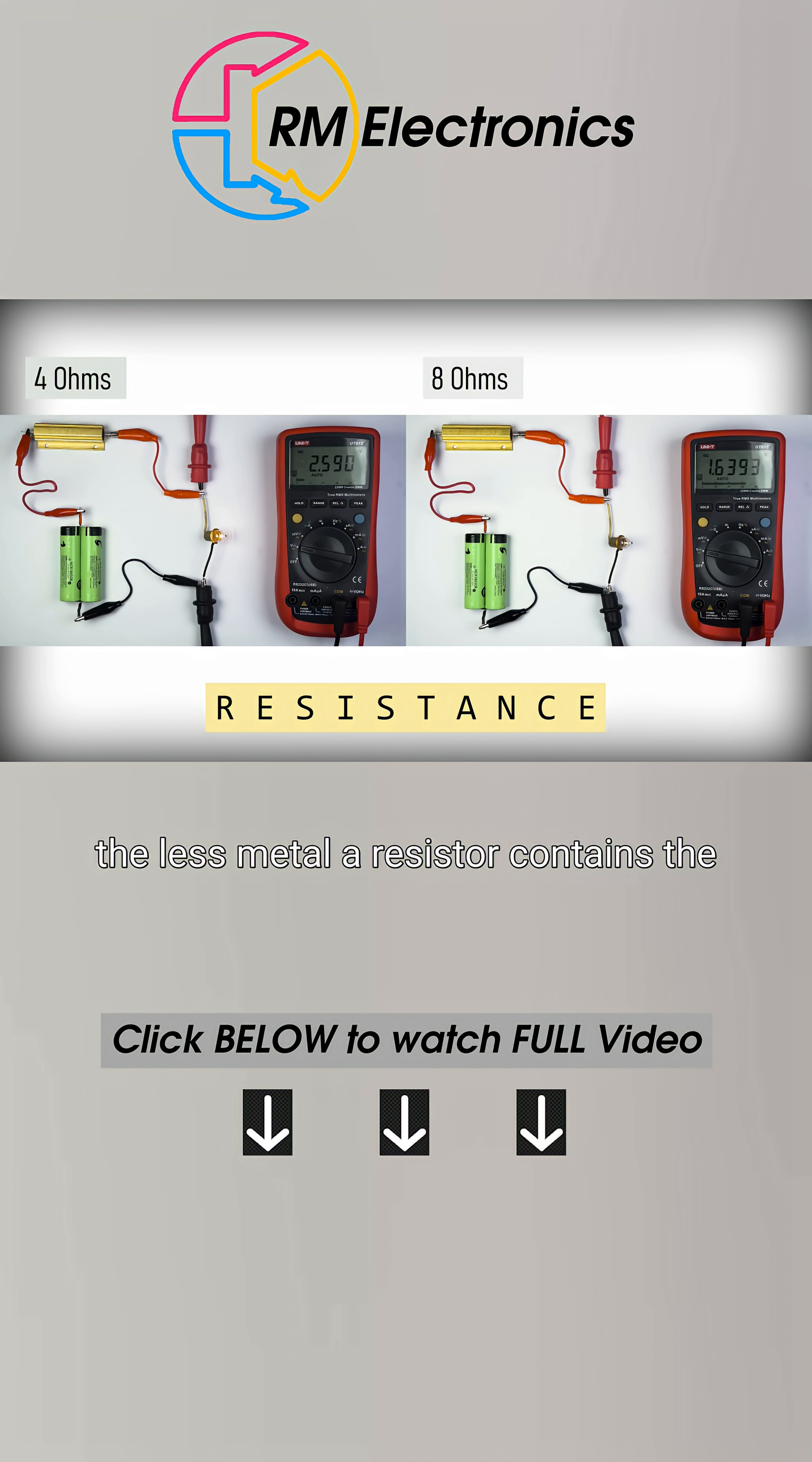The less metal a resistor contains, the higher the resistance. The higher the resistance, the lower the current in the circuit and the higher the voltage drop across resistor's terminals.